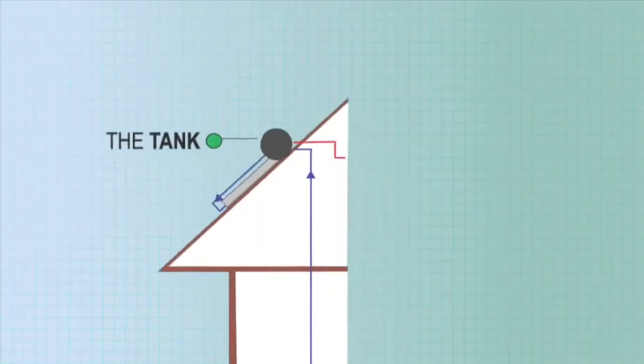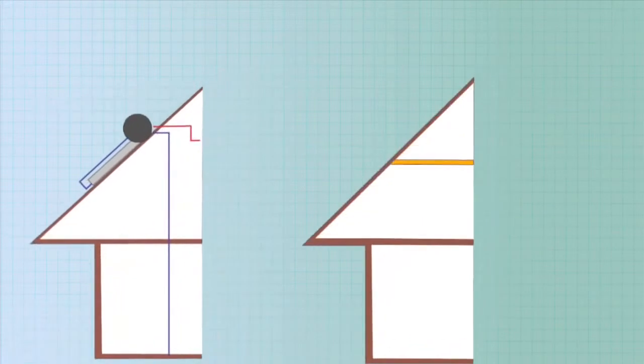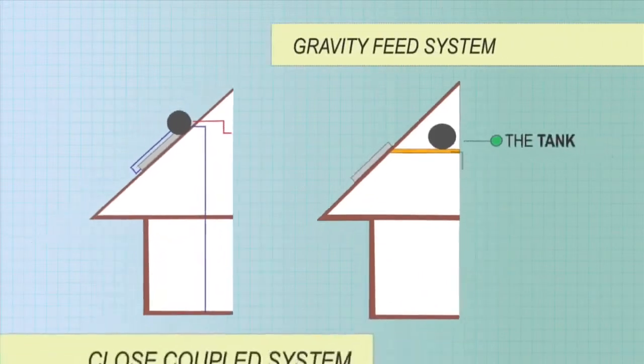The tank may sit on the roof with the collector, a close-coupled system, or within the roof cavity above the collector, a gravity feed system. With these systems, the roof support structures must be strong enough to handle weights of up to 800 kilograms.